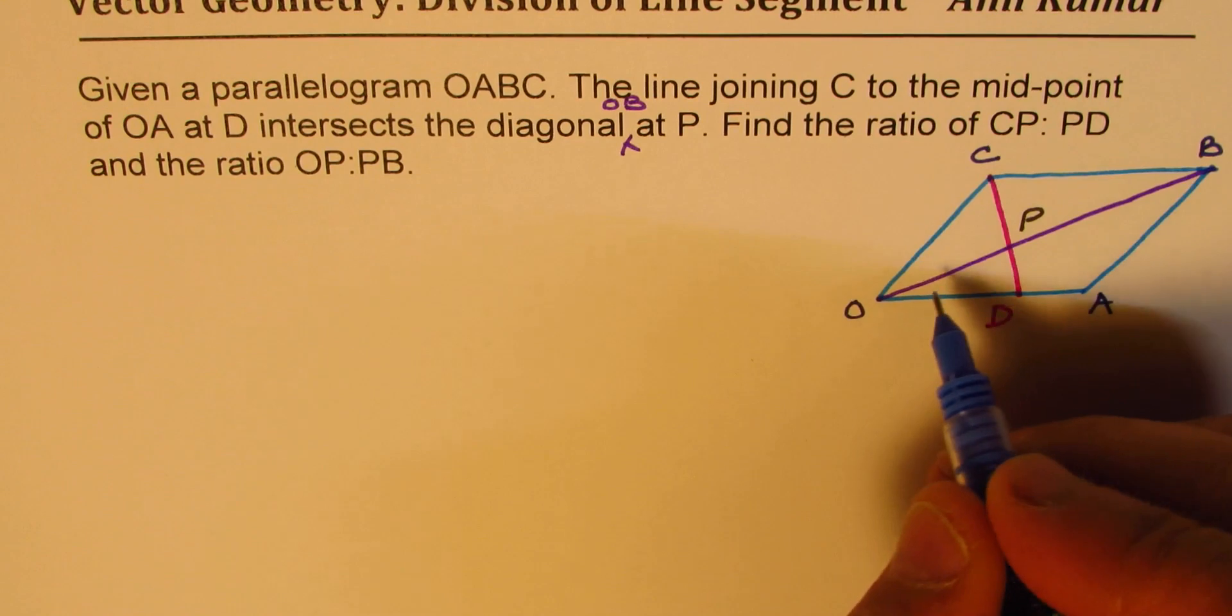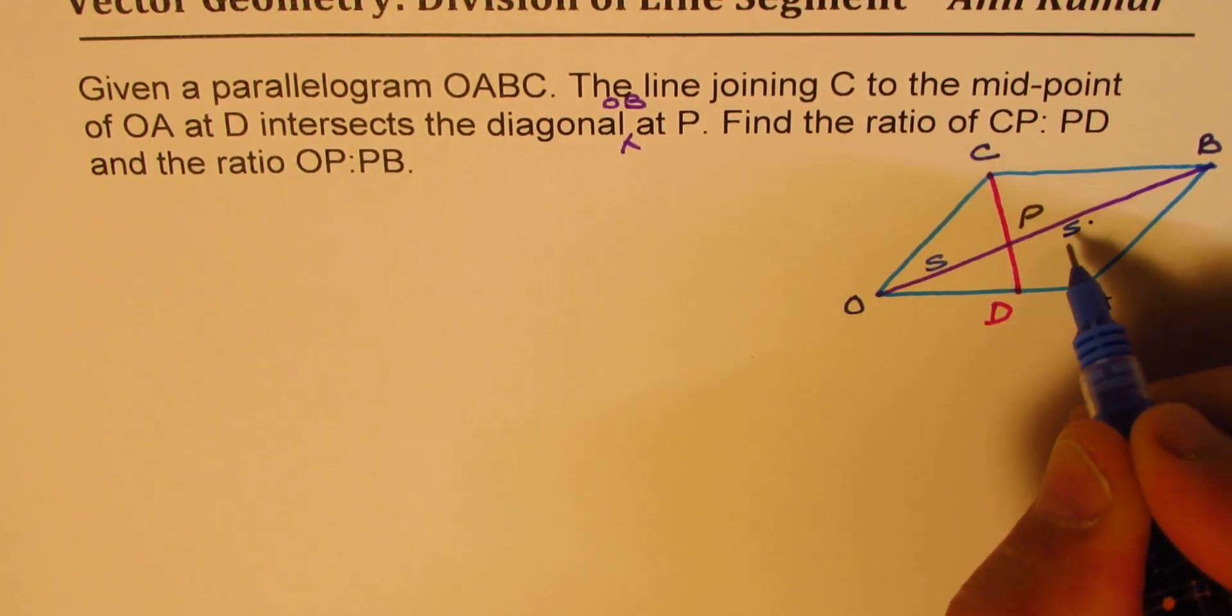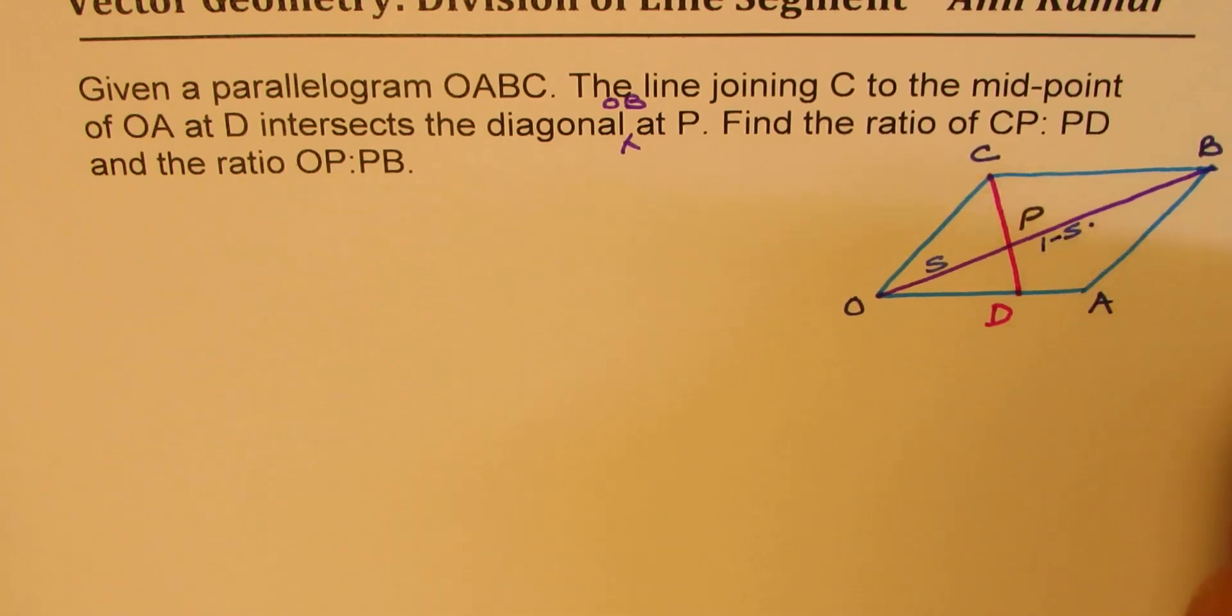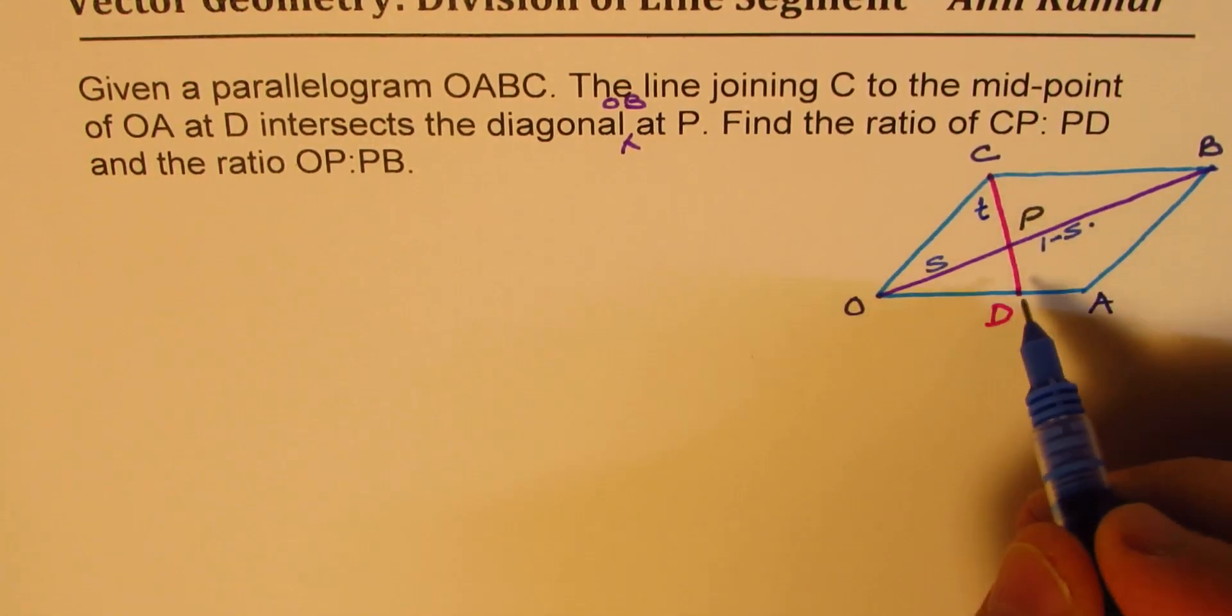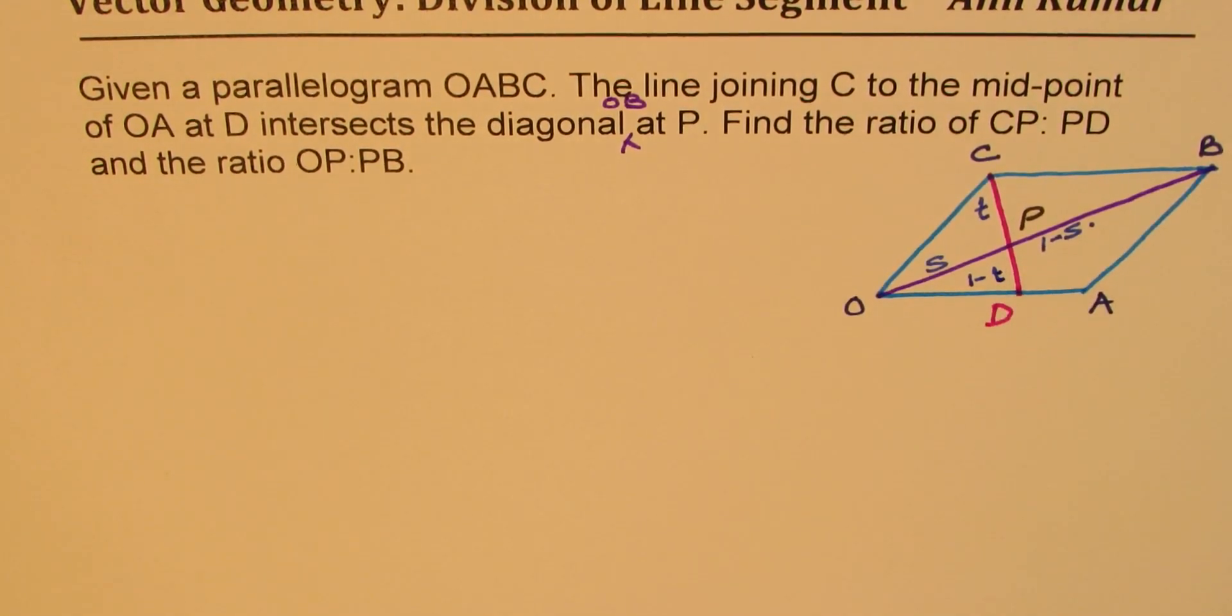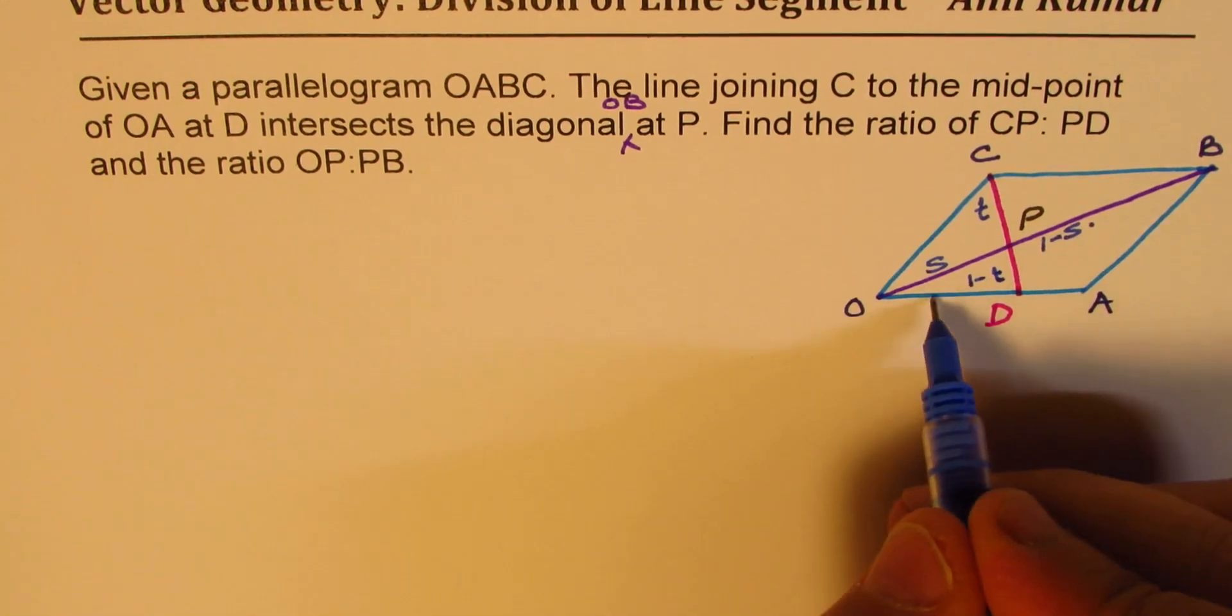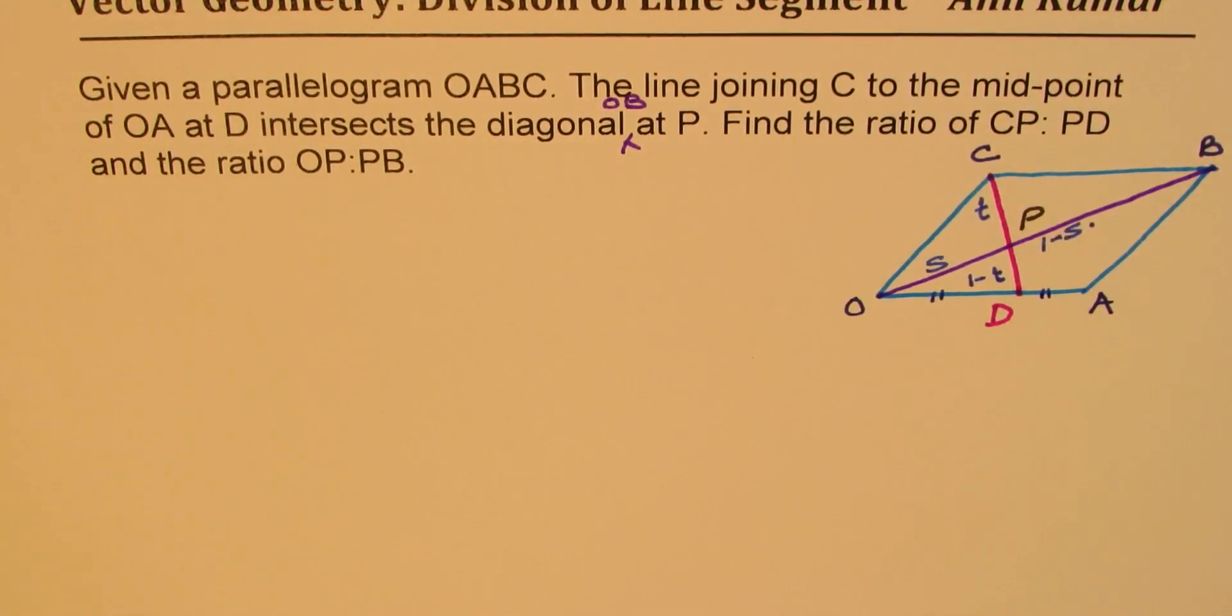So let us assume that the ratio is S to 1 minus S. We can write here, right? And this, let it be T to, let this side be 1 minus T. Let this be the ratio. We know D is the midpoint, so OD is equal to DA.